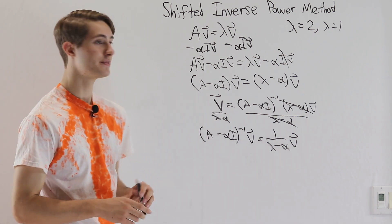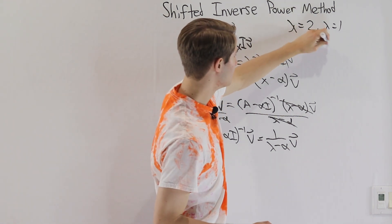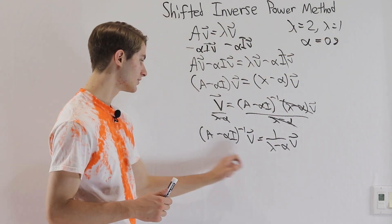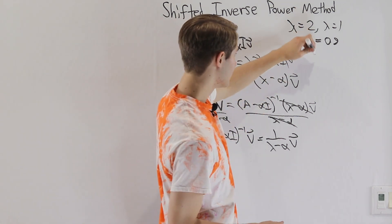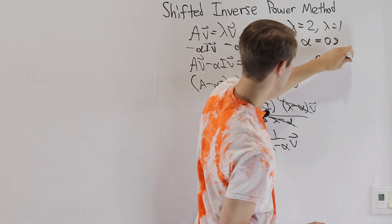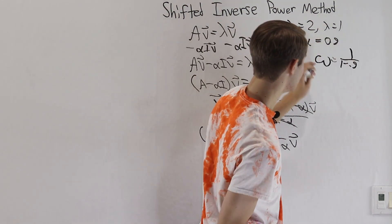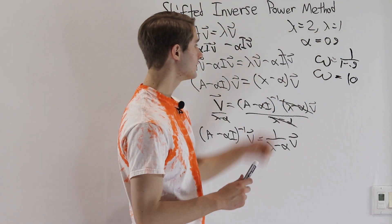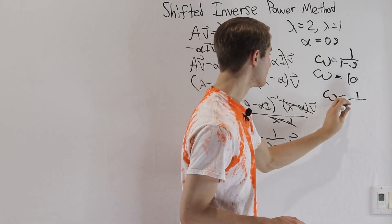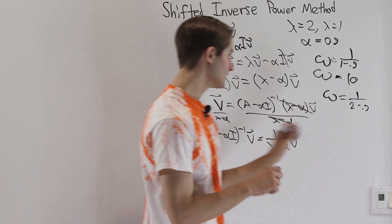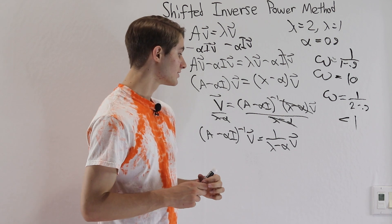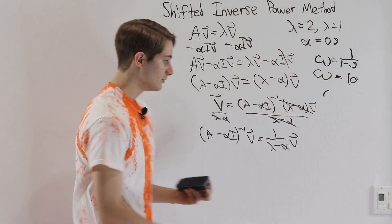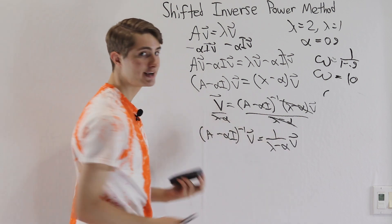Let's go back to our equation. What happens if we let alpha equal 0.9? For our new matrix (A minus 0.9I) inverse, the eigenvalue omega corresponding to the original lambda equals 1 is 1 over (1 minus 0.9), which is suddenly 10. The other omega is 1 over (2 minus 0.9), which is less than 1. So our original eigenvalue lambda equals 1, which wasn't the dominant eigenvalue, now becomes the dominant eigenvalue because of this shifted inverse changing the eigenvalues.